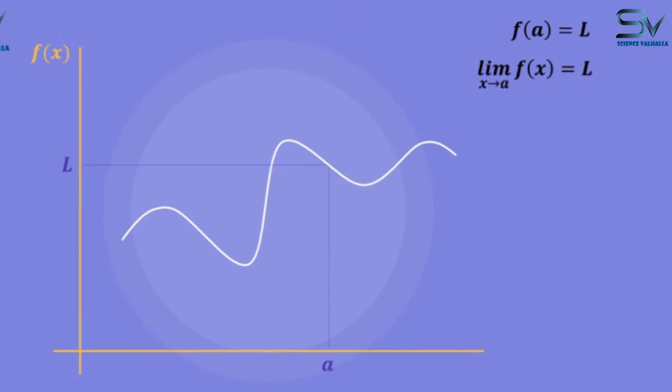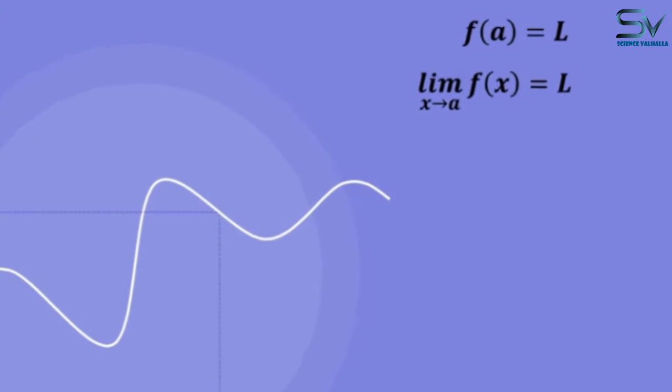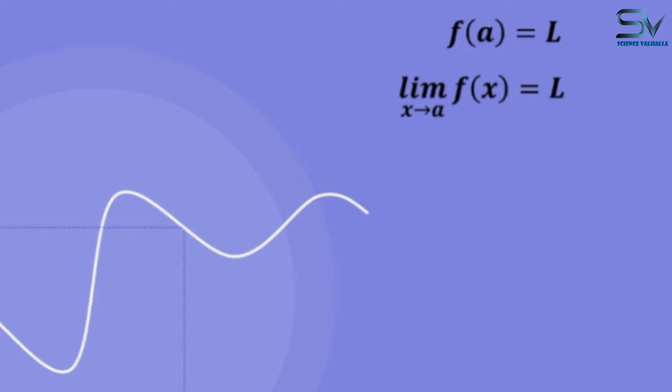Let's start with left and right continuity. As we saw in the previous video, there was a condition for the function's continuity at a point and the function's value must be equal to the function's limit.